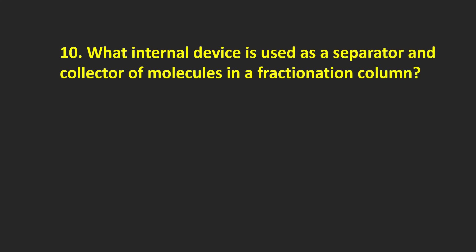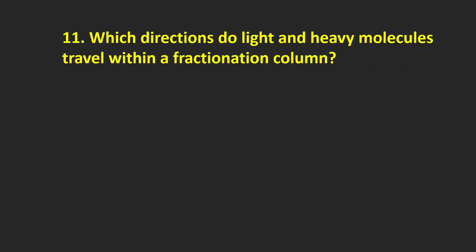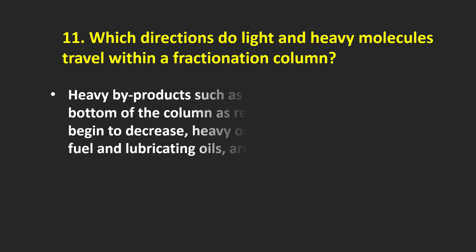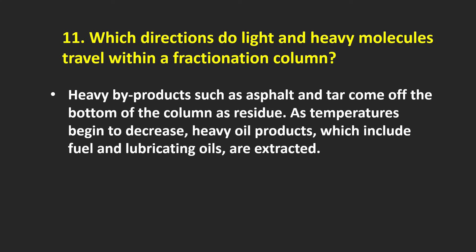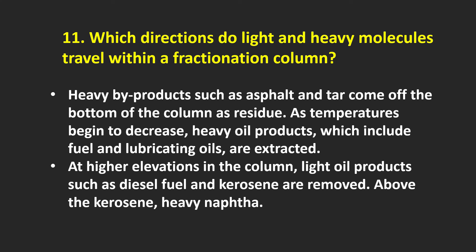What internal device is used as a separator and collector of molecules in a fractionation column? Trays are used for this purpose. Regarding molecular travel within a fractionation column: heavy oil products, which include fuel and lubricating oils, are extracted at lower elevations, while light oil products such as diesel fuel and kerosene are removed at higher elevations in the column. Above the kerosene extraction point, heavy naphtha is collected.